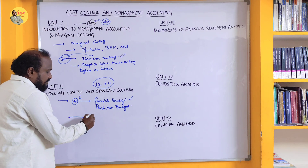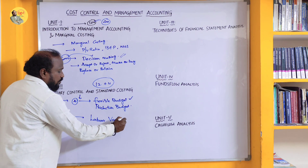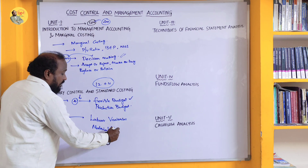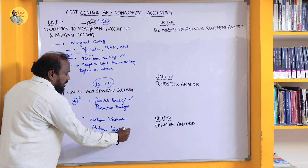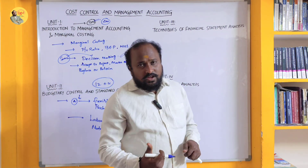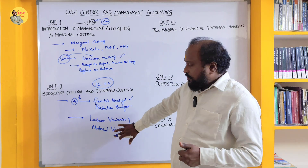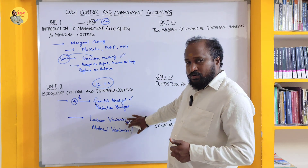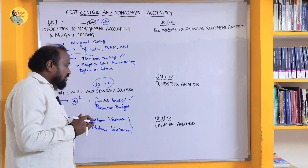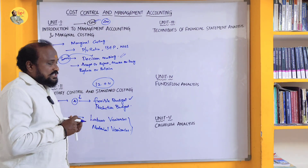For Standard Costing, there will be two important topics: Labor Variances and Material Variances. He will ask from either or both. Material Variances include MCV, MVV, and MPV. This topic is very important — please give it priority, because it is 100% likely to appear and can give you 16 marks. There may also be a short answer question from this chapter.